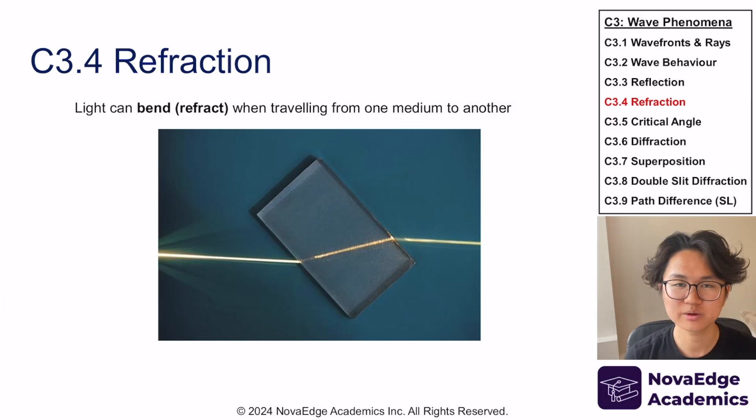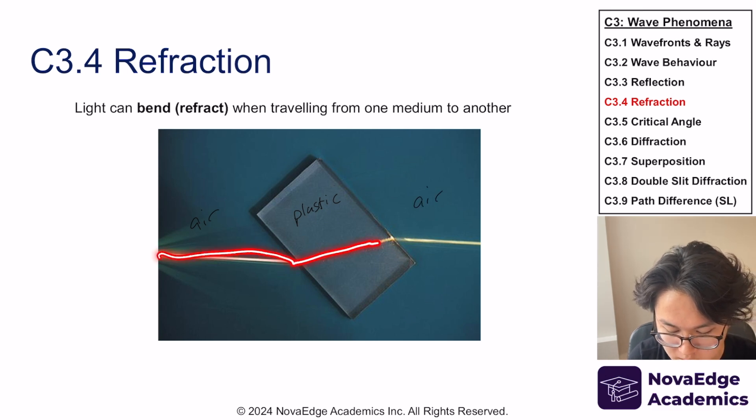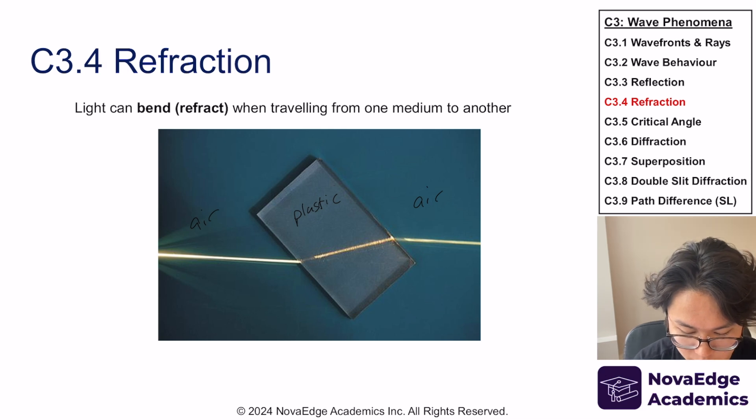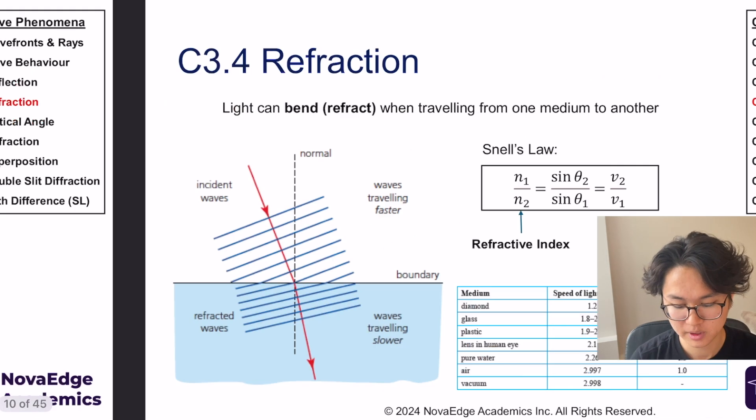Now we're done with reflection. There's no math or anything, reflection is just very straightforward. So we're going to get into refraction. Refraction is about bending. We know light can bend or refract when traveling from one medium to another. This does not happen if it's just in the same medium. It happens when it's in different mediums. In this case we have air and then plastic or glass and then back into air again, and that's why it bends like that.